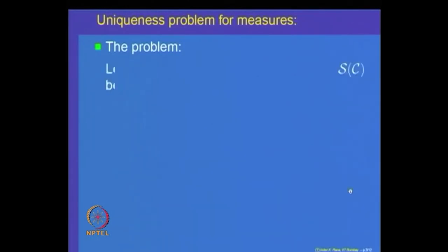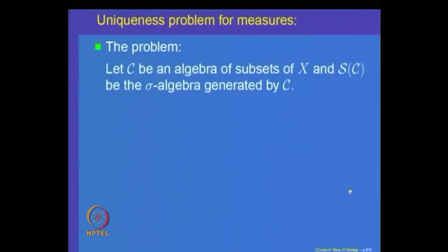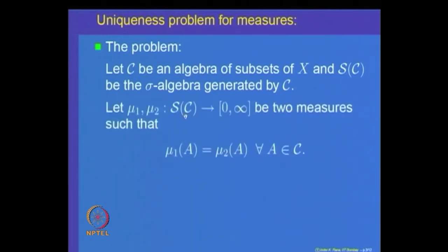Let us look at the uniqueness problem for today's lecture. The problem is as follows: we are given C, an algebra of subsets of a set X, and S(C) is the sigma algebra generated by C. We have two measures mu_1 and mu_2 defined on the sigma algebra generated by C such that mu_1(A) = mu_2(A) for every A belonging to C. For all elements in C, mu_1 and mu_2 agree.